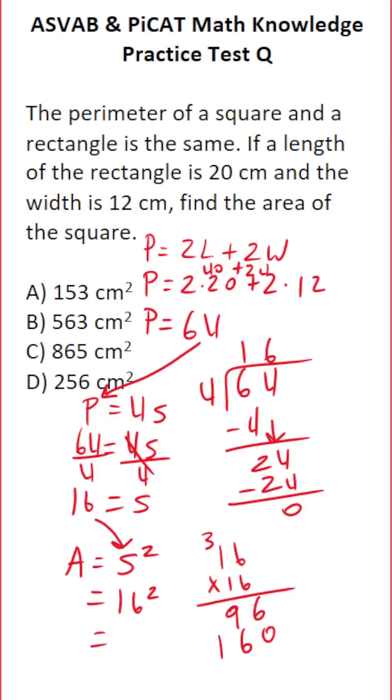1 times 6 is 6, 1 times 1 is 1. Adding it up: 6 plus 0 is 6, 9 plus 6 is 15 carry 1, 1 plus 1 is 2. So the area of our square is D, 256 centimeters squared.